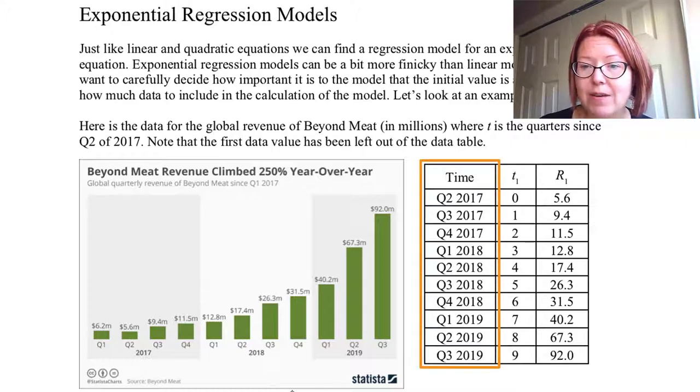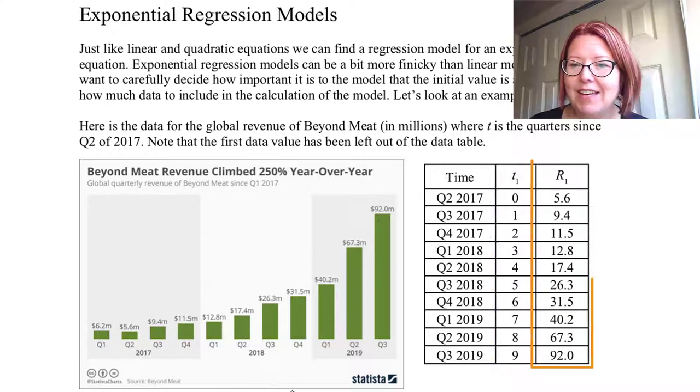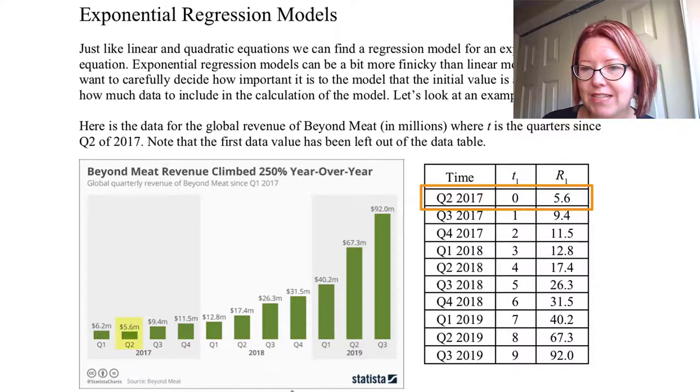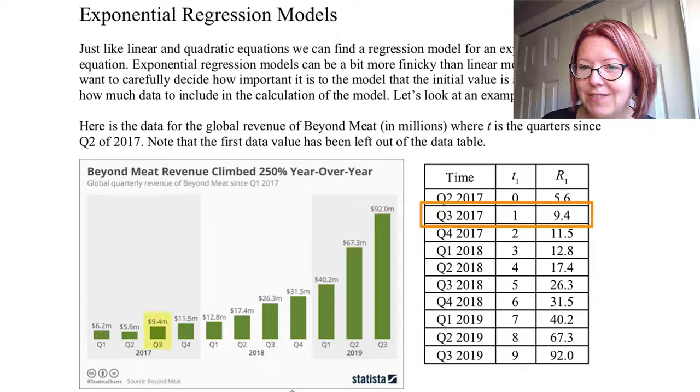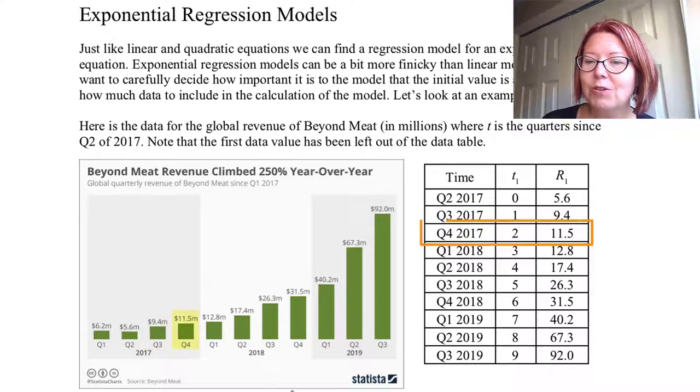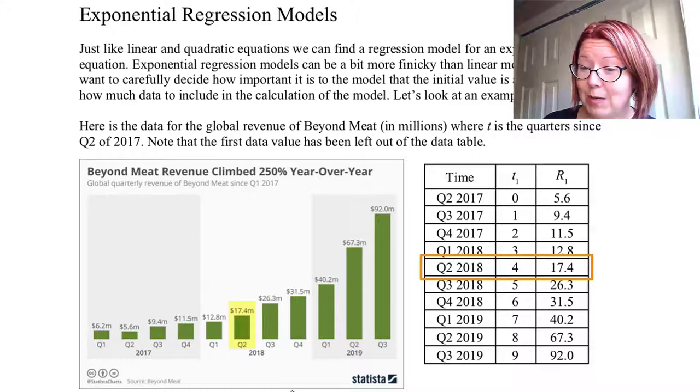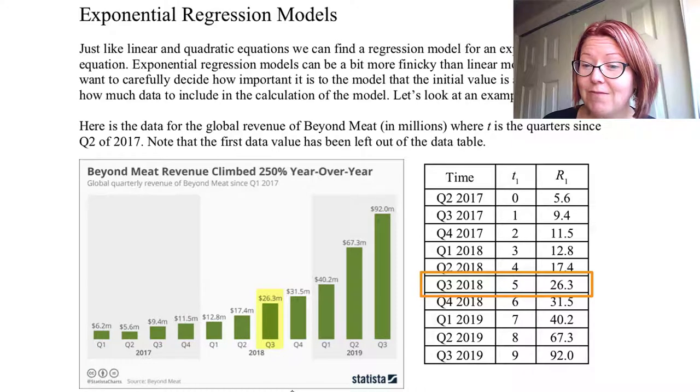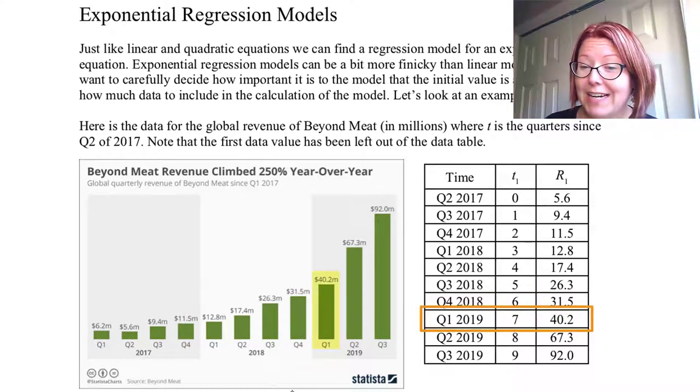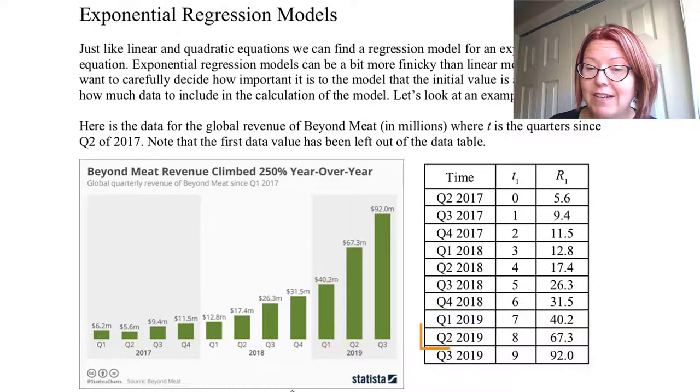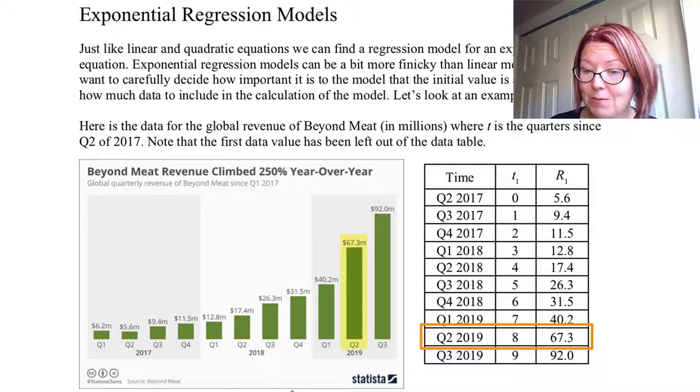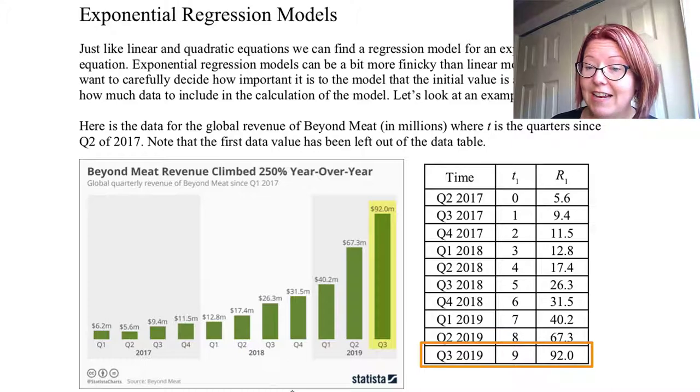We have a table of data showing us the time, the t value that's associated with that time, and capital R, which is the revenue. For example, quarter two 2017 is a t value of zero, that's our initial value, and the revenue is 5.6 for 5.6 million. Quarter three 2017 is a t of one, with revenue of 9.4. Quarter four 2017 is a t value of two, with revenue of 11.5. Quarter one 2018, t value three, revenue 12.8. Quarter two 2018, t value four, revenue 17.4. Quarter three 2018, t value five, revenue 26.3. Quarter four 2018 is t value six, revenue 31.5. Quarter one 2019 is t value seven, revenue 40.2. Quarter two 2019 is t value eight, revenue 67.3. And quarter three 2019 is t value nine, and revenue 92.0.